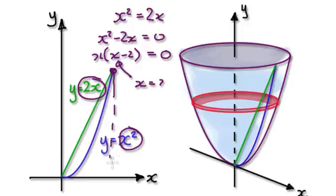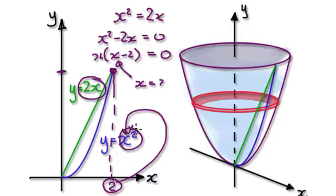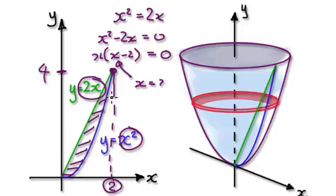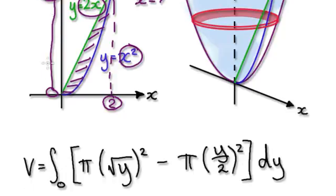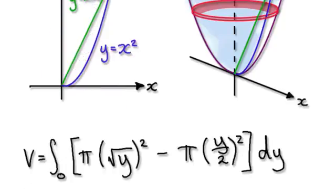So this point here, x equals 2. If x is 2, what will y be? Put it into the equation and y will be 4. So we need to sum up everything from 0 all the way to 4. We need to integrate from 0 to 4.